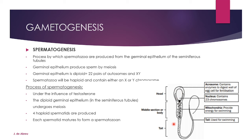The sperm cell has a head, a middle section, and a tail. In the head there are two parts: the acrosome and the nucleus. The acrosome contains enzymes which digest the wall of the egg cell for fertilization, allowing the sperm to penetrate through. The nucleus contains 23 chromosomes — the genetic information from the male — and only the nucleus enters the egg cell. The middle section has mitochondria which provide energy for the sperm cell to swim. The tail is used for swimming.